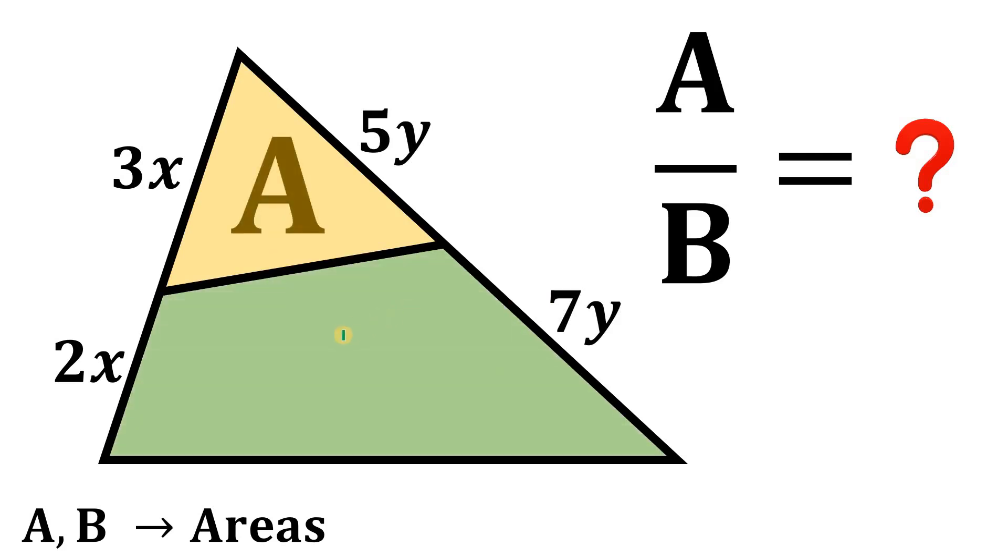And this bottom quadrilateral, this area, simply equal to B. Now, the goal is to find the ratio of areas A and B.